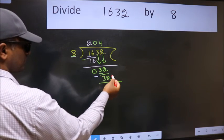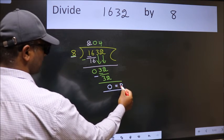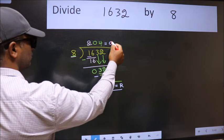No more numbers to bring it down, so we stop here. This is our remainder and this is our quotient.